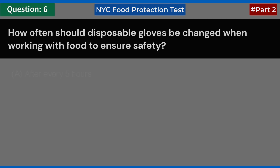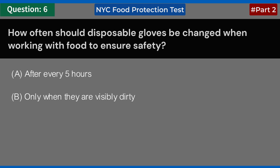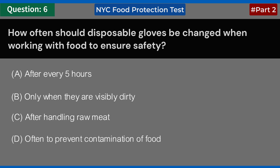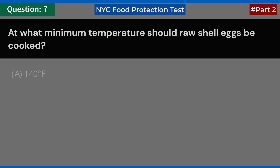How often should disposable gloves be changed when working with food to ensure safety? A. After every 5 hours. B. Only when they are visibly dirty. C. After handling raw meat. D. Often to prevent contamination of food. Answer: D. Often to prevent contamination of food.